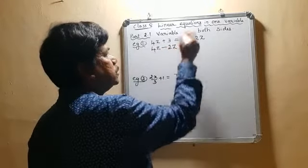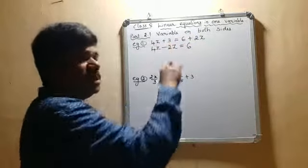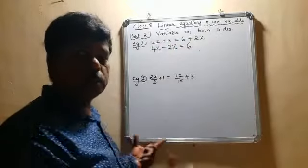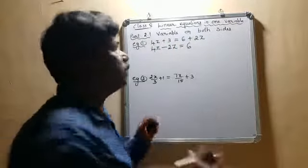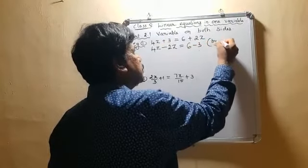Now, this equals 6, which is already present on that side. This plus 3, I want to send it to the other side in one single step. So plus 3 becomes minus 3. This is by transposing.